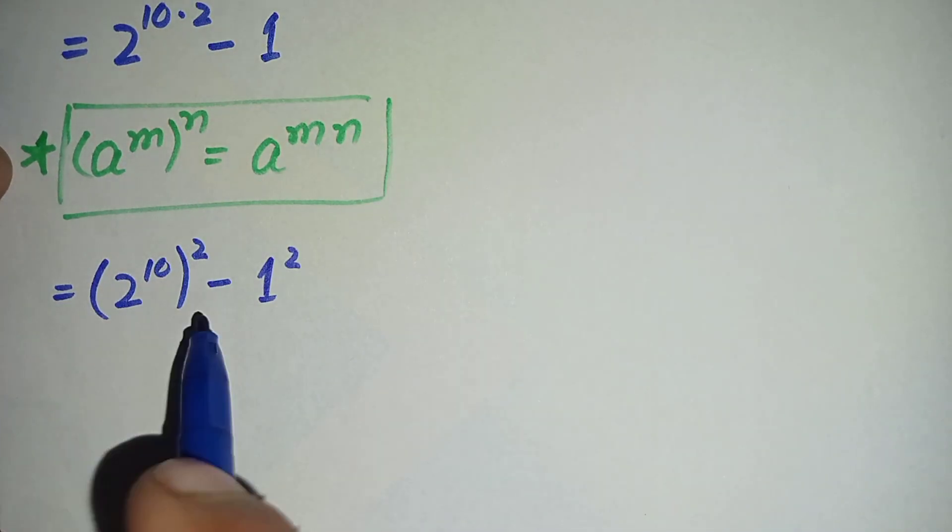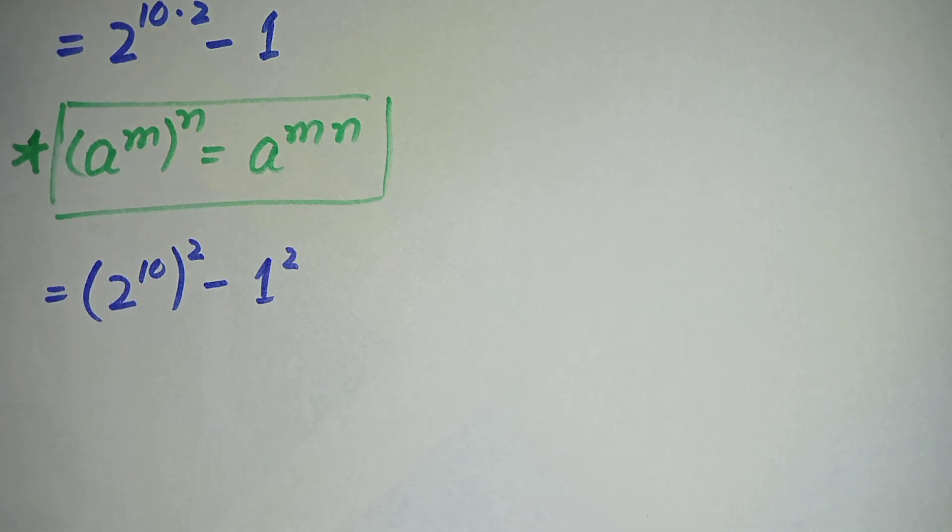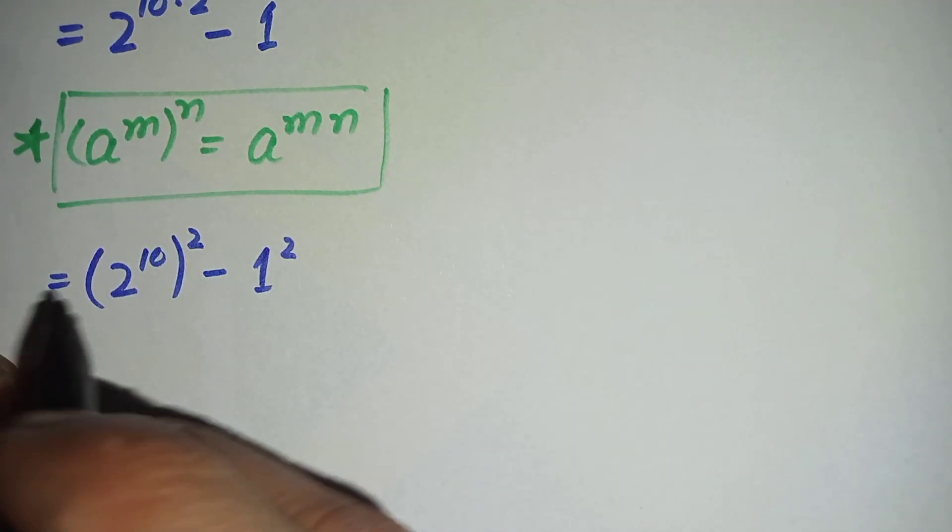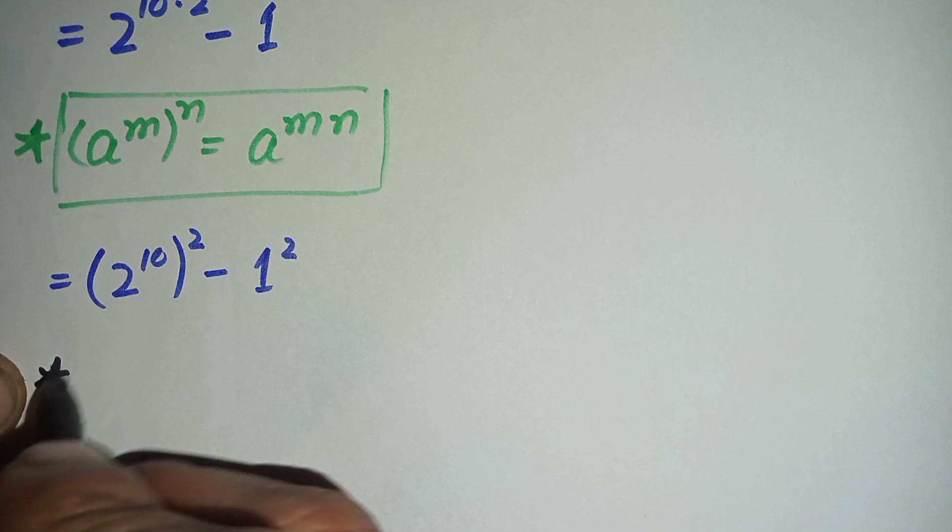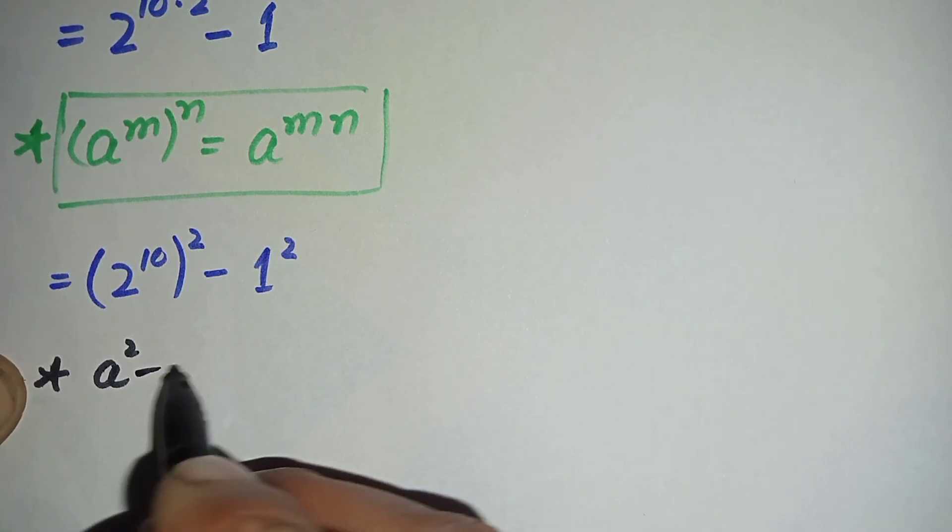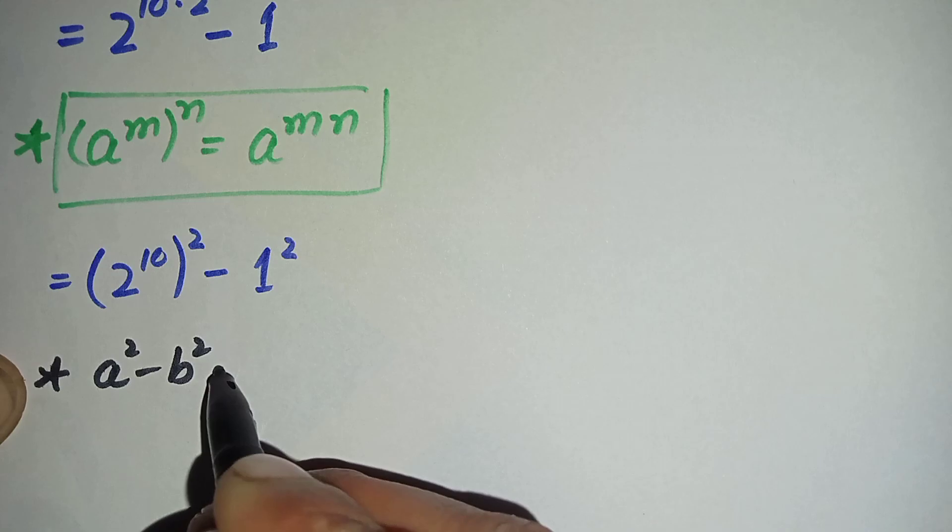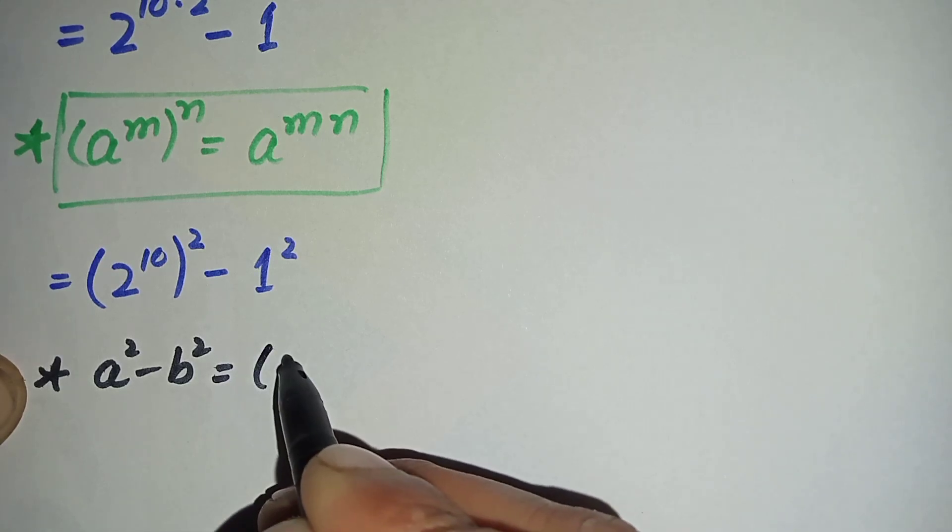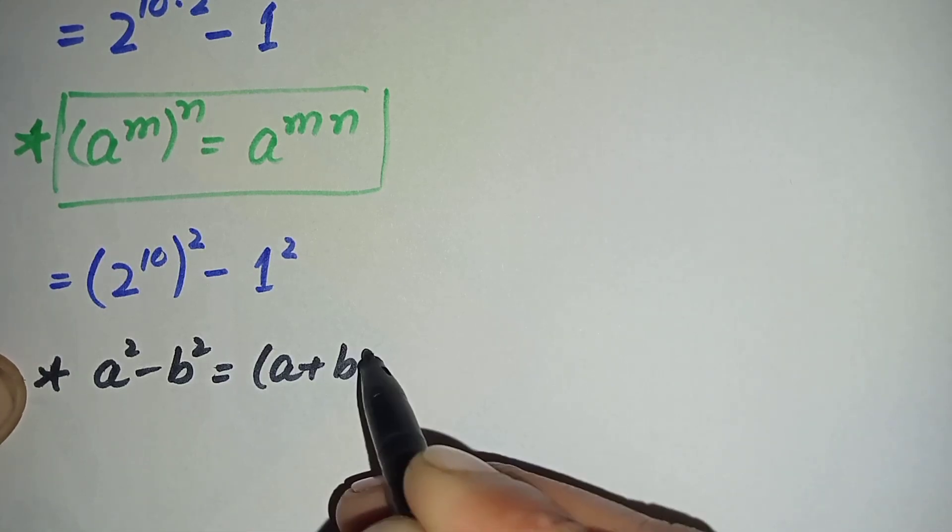Now here in this equation we will use an algebraic identity. So here we will use this algebraic identity: a square minus b square is equal to a plus b times a minus b.